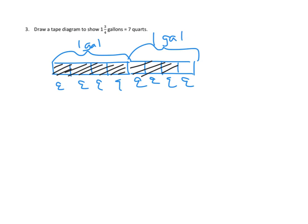All right, so there's one and three quarters gallons—one gallon and three out of four parts of this gallon—and how many quarts is that? Let's just add up the quarts: one, two, three, four, five, six, seven. Yeah, sure enough, one and three quarters gallons is the same as seven quarts. Awesome, a great tape diagram.